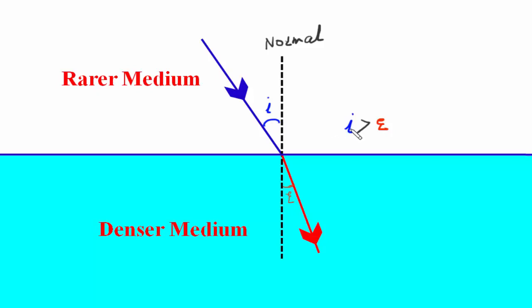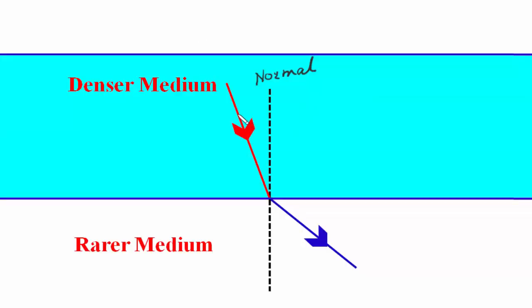When ray of light passes from denser medium to the rarer medium, the refracted ray bends away from the normal. So this is the angle of incident i, and this is the angle of refraction, denoted by letter r. If we compare these two angles, you will notice that the angle of incident i is smaller than angle r.